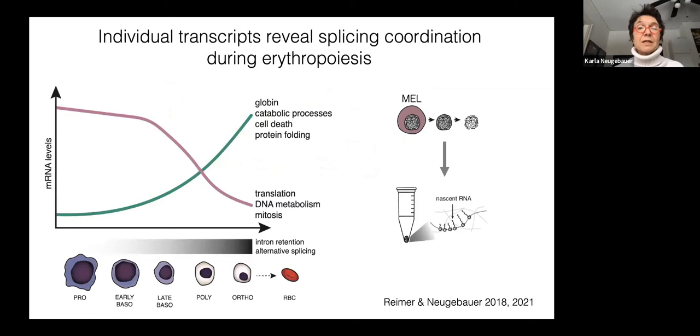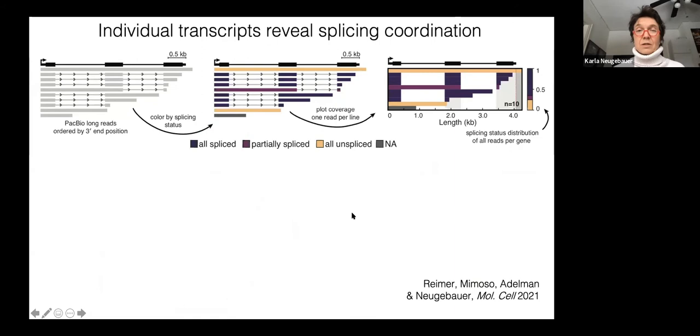Our system for today is erythropoiesis. This is the thesis work of Kirsten Reimer. She took a cell culture model of erythropoiesis, MEL cells, mouse erythroleukemia cells, and took them through a series of developmental stages so that she could look at the transition from cycling cells to globin producing erythropoietic cells. What she's doing is purifying nascent RNA using sedimentation and washing of the chromatin, so a mechanical isolation of chromatin and the analysis of the RNA that's associated with that chromatin.